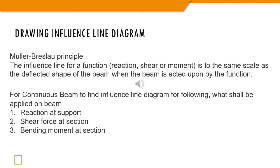As per Muller-Breslau principle, for continuous beam to find influence line diagram for the following what shall be applied on a beam? Reaction at support, shear force at a section, bending moment at section. Please explain procedure through sketch.